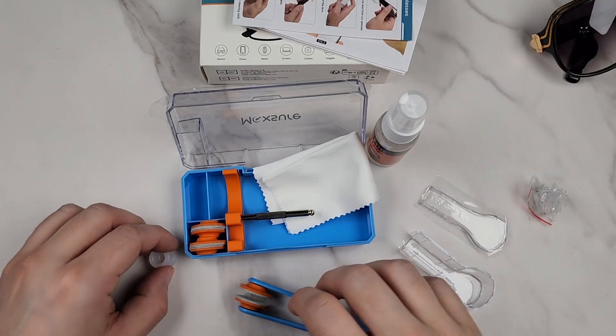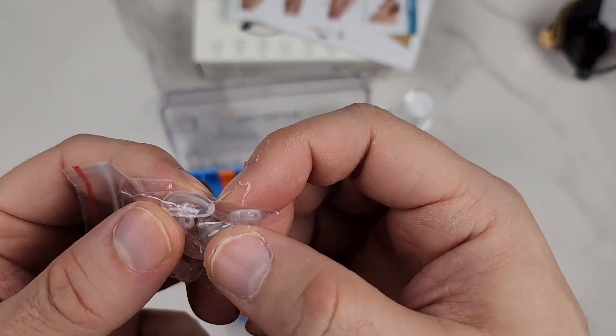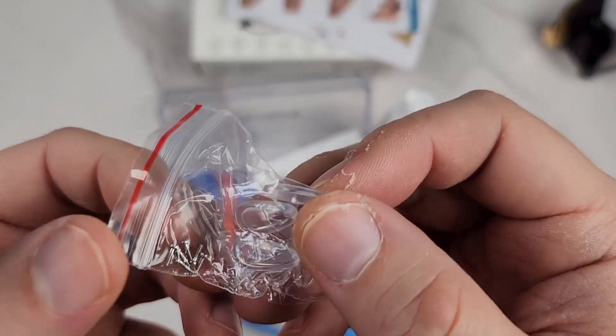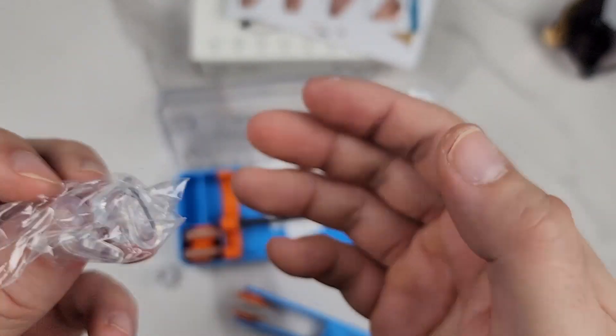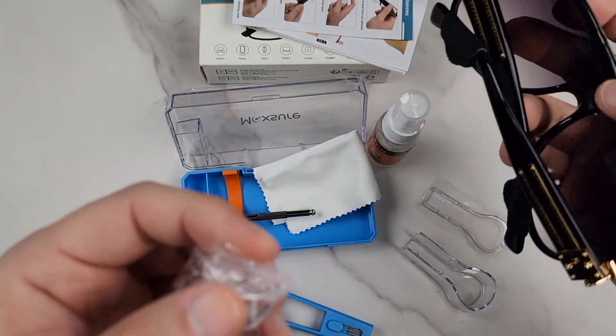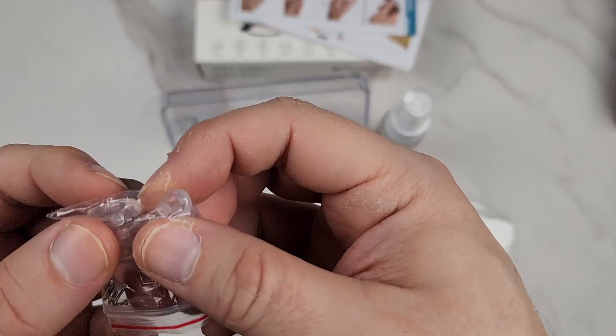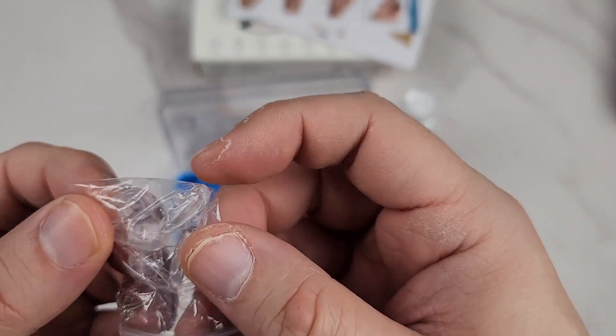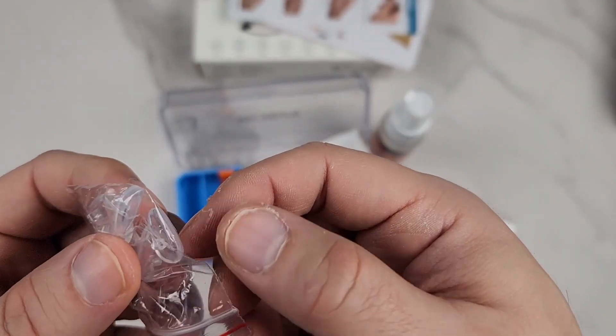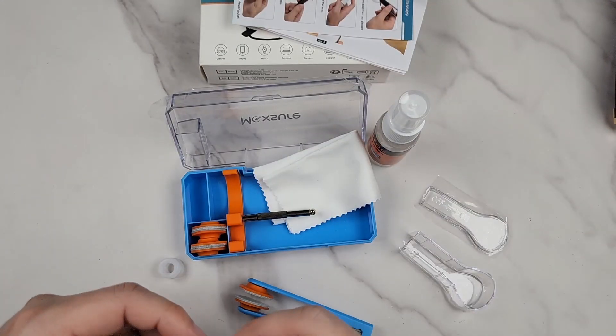They also give you these changeouts for the nose bridge, little cushions. They give you little screws too. You can use the screwdriver with the little screws to change these. Eventually the cushions get yellow, so it's nice to change them out. You have a whole bunch of them. This is a complete set.